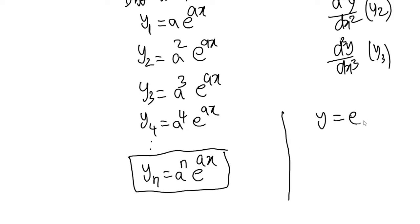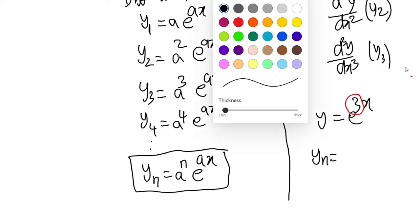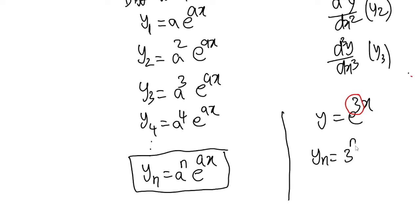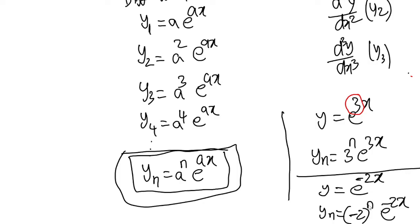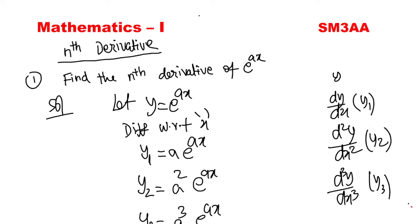Suppose you have a problem: if y = e^(3x), what is the nth derivative? Apply the formula: yn = a^n · e^(ax). Here a = 3, so yn = 3^n · e^(3x). One more problem: y = e^(-2x). Here a = -2. So yn = (-2)^n · e^(-2x). This is the nth derivative of the exponential function.